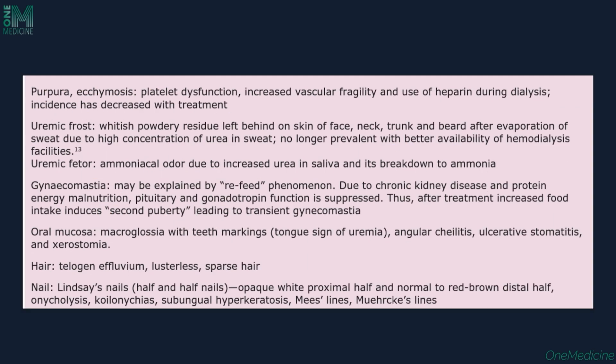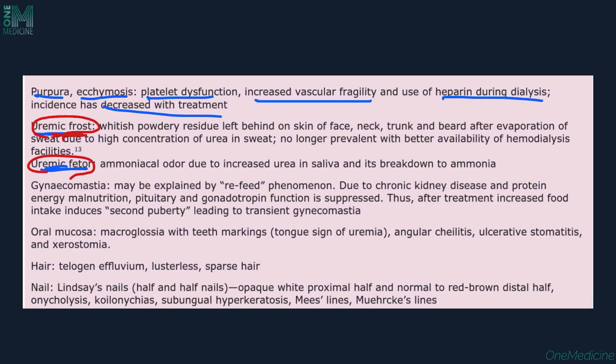Other manifestations include purpura and ecchymosis due to platelet dysfunction, increased vascular fragility, or heparin use during dialysis. Patients can have uremic frost and uremic fetor. Uremic frost is a whitish powdery residue left behind on the skin — on the face, neck, trunk, and beard area — because of evaporation of high amounts of urea present in the sweat. It is no longer seen because of the advent of dialysis. Uremic fetor is an ammoniacal odor due to increased urea in the saliva and its breakdown product, ammonia.